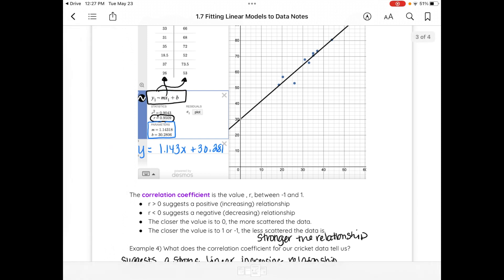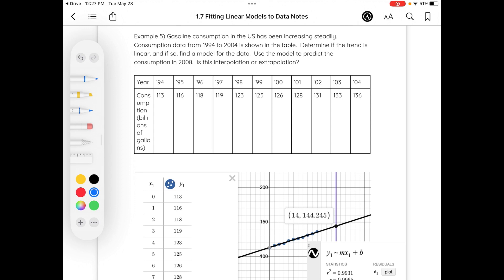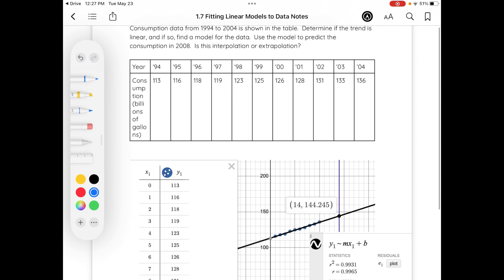So let's put it all together in a final example. Gasoline consumption in the U.S. has been increasing steadily. Consumption data from 1994 to 2004 is shown in the table. Determine if the trend is linear and if so, find a model for the data. Use the model to predict the consumption in 2008. Is this interpolation or extrapolation. So I'm going to utilize the number of years since 1994 as my x value. So I'm going to say that this is going to be year 0, year 1, 2, 3, 4, 5, 6, 7, 8, 9, and 10.